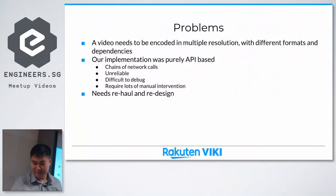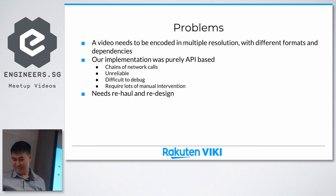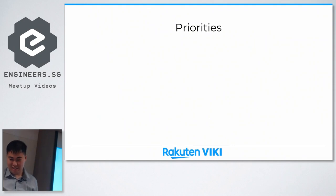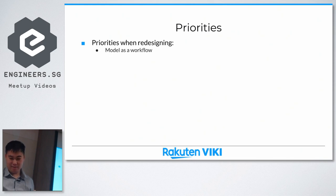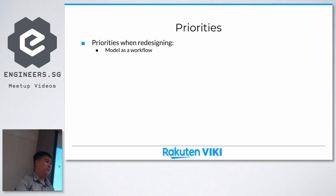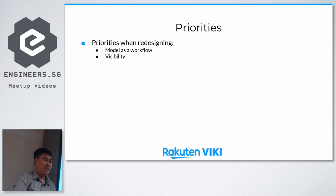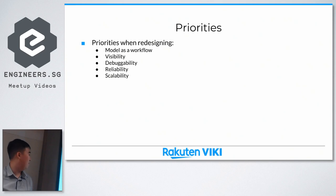It needed to be redesigned. So at the end of 2017, we sat down — just me and another guy — and wanted to redesign and make it better. We listed our priorities: first, we have to model it as a workflow, not as a chain of network calls. We need visibility into the system — when an encoding is running, we need to know at which phase it is, and how long it might take to finish. We need debuggability, reliability, and it has to be scalable because we were getting more and more content, at a rate of maybe 5x or 10x at that time.